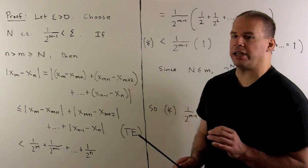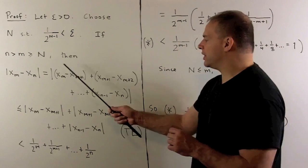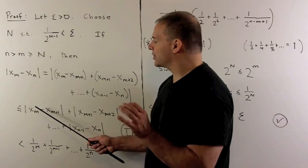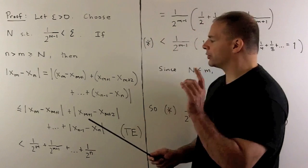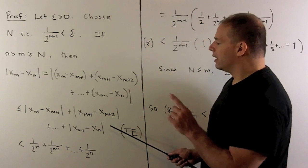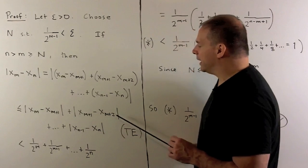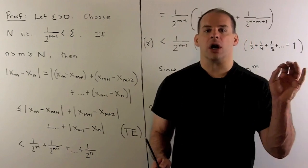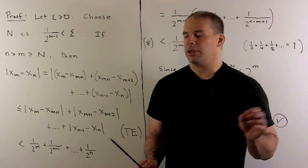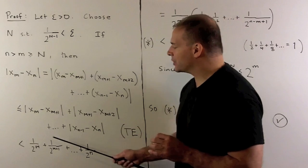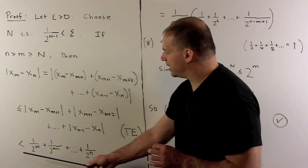Here we can apply the triangle inequality. We're going to have that this term is less than or equal to the sum of the absolute values of the terms in the parentheses. These are going to be exactly what we need to let our assumption apply. We can rewrite each of these as powers of one-half and then take the sum.